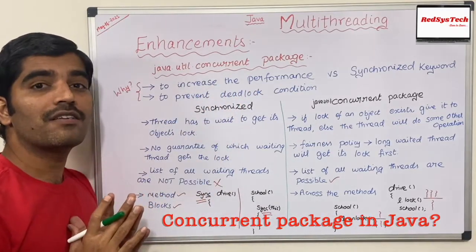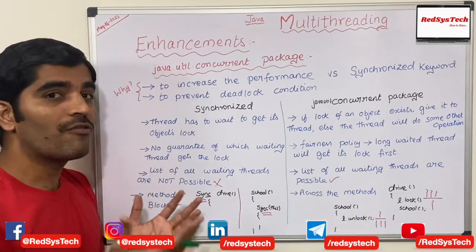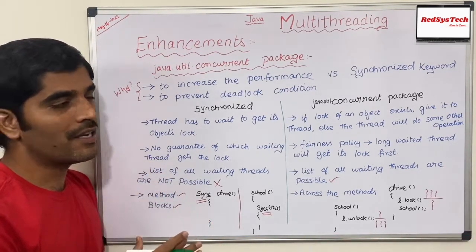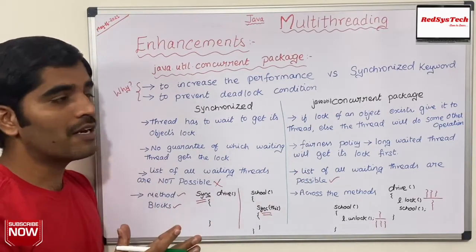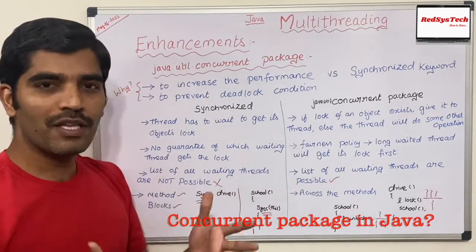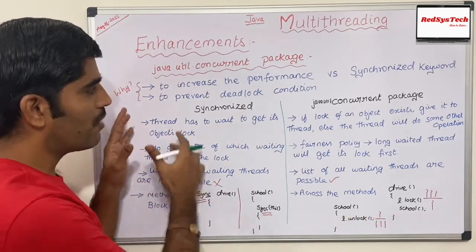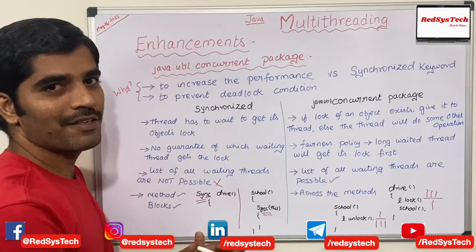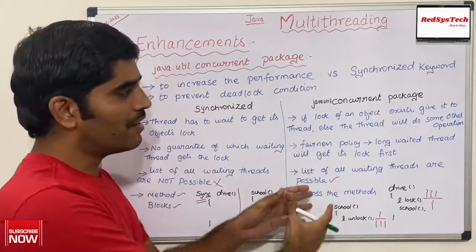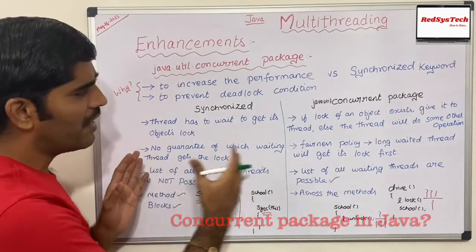We can prevent deadlocks by using the concurrent package. Guys, we are not supposed to use the synchronized keyword anymore in Java. If you use it, you are still following the traditional way, and the performance of the program will be lesser than by using the concurrent package. It's very important to understand the difference between using the synchronized keyword versus the concurrent package, so that if anyone asks you to implement multi-threading, don't directly write your program using synchronized keyword.